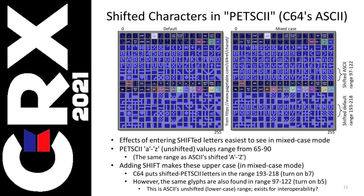So a little bit of background on shifted characters in PETSCII — that's the Commodore 64's ASCII. I have two charts here from PageTable, a great site. On the left is the default character set when you first turn on the Commodore; on the right is when you switch it to Mixed Case. When you enter letters A through Z, they're in the range starting with 65, like you'd probably expect if you're used to ASCII. When you shift them, they go into that lower part — the capital letters in the 8th bit range starting at 193. But for interoperability reasons, those shifted letters are in there twice. They're there again in the range from 97 to 122, and it turns out that's going to help provide the solution to this problem.